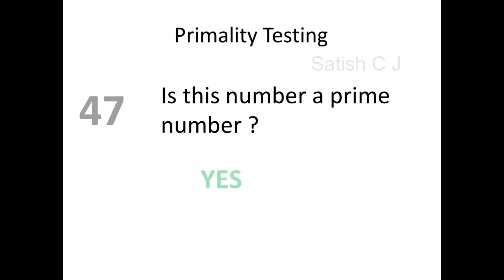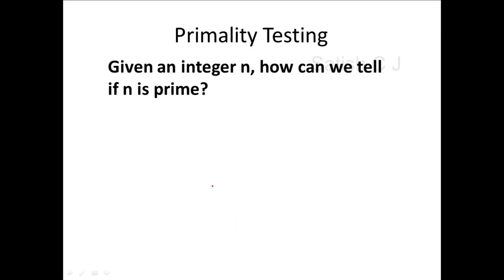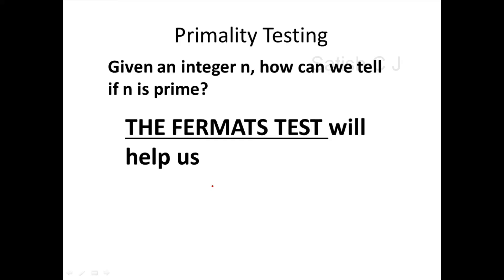But if I give you a number like 2,457,783, you may take some time because this is not a small number. We are not used to this number and you need some time to really check whether it is a prime number or not. Actually this number is a composite number — it has more factors. So the question is: given an integer n, how can we say whether that number is a prime number? This is all about primality testing, which helps in determining whether a given integer is actually prime. We'll be learning Fermat's little theorem, which will help us determine that.